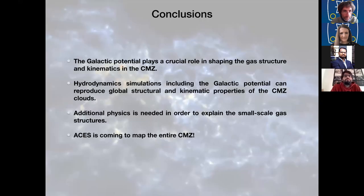And this brings me to my conclusions. I showed you that the galactic potential plays a crucial role in shaping the gas structure and kinematics in the CMZ. And that by including the galactic potential in hydrodynamic simulations, we can reproduce global structural and kinematic properties of the CMZ clouds. And also on smaller scales, we need additional physics in order to reproduce the structure. And finally, just a final reminder, ACES is coming, so stay tuned. Thank you.